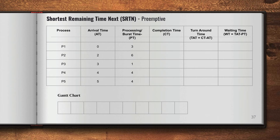Let's see how we can solve these problems. In the examination you might get a question like: there are five processes, each with an arrival time and a processing time, and you are asked to calculate the average turnaround time, average waiting time, etc. We can do that using the Gantt chart.